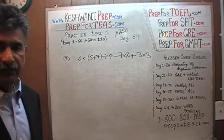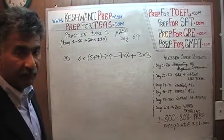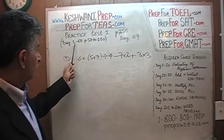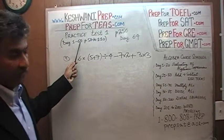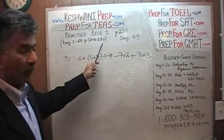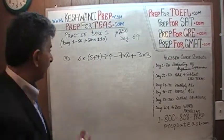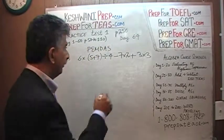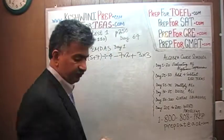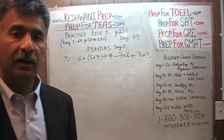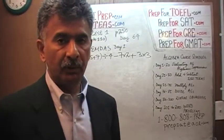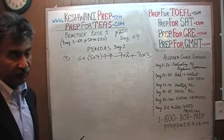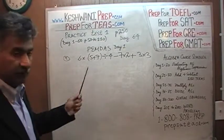Now if you recall, this problem has to do with the concept we learned on the very first day of our lessons. On days 1 through 60, we did math exercises found on pages 50 through 110, and on day 1 we covered the concept known as PEMDAS. This is a mnemonic device that helps us memorize the order of operations — the proper order of operations. P stands for parentheses, and parentheses are to be done first, which is exactly what we are going to do here.